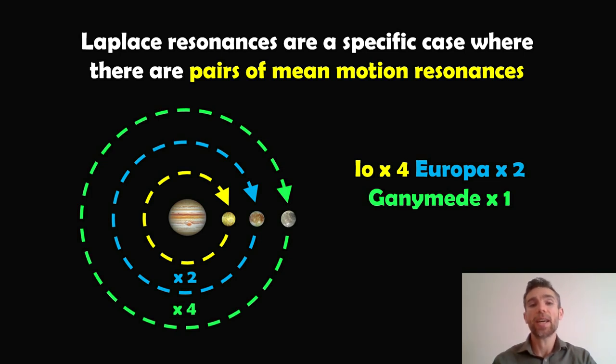These are in a Laplace resonance, which is basically pairs of mean motion resonances. Here, Io goes around four times for every two orbits of Europa and every one orbit of Ganymede.